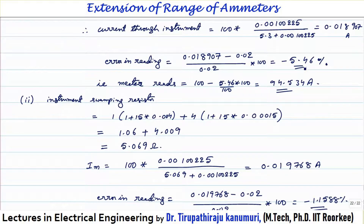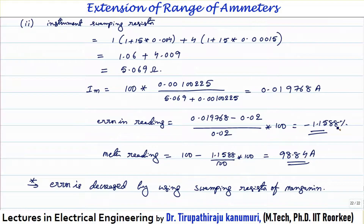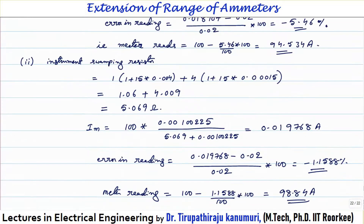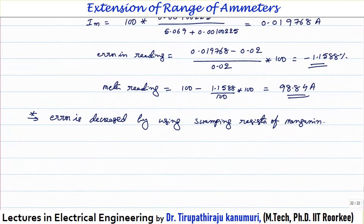Previously the meter showed 94.53 A for 100 A input; with the swamping resistor it now shows 98.84 A — the error is drastically decreased. If a 30:1 ratio is used instead of 4:1, the temperature effect is nearly completely nullified. We conclude that the error is decreased by using a swamping resistor made of the same material as the shunt, i.e., manganin. I hope the concept of shunts and extending the range of the ammeter is completely clear. Thank you very much.